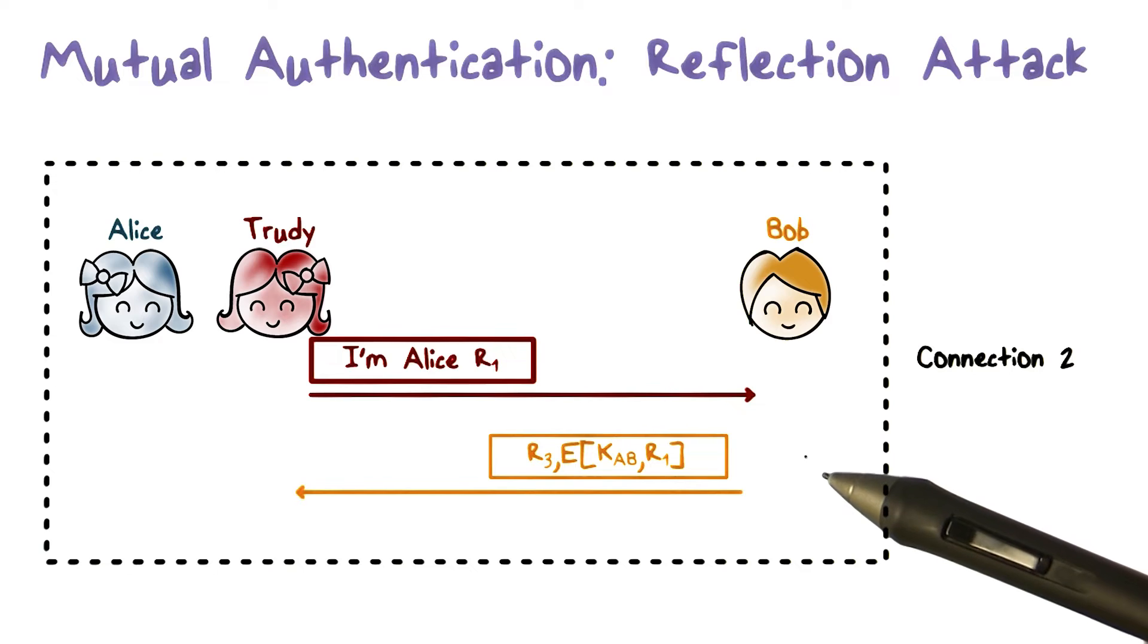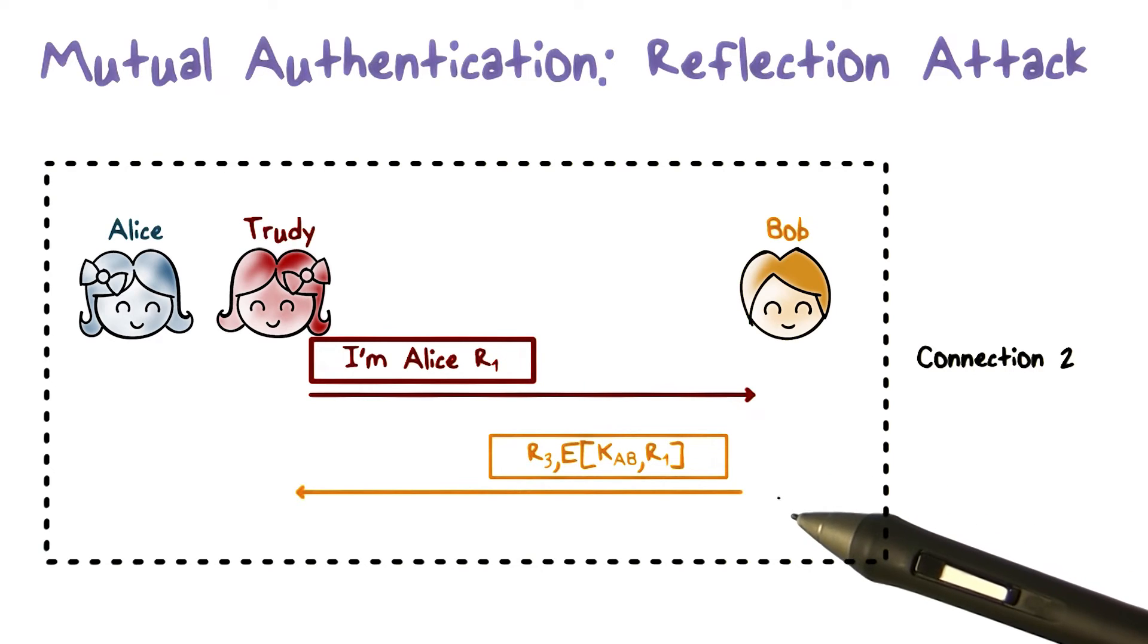According to the protocol, Bob responds with the ciphertext of R1 and another challenge R3.